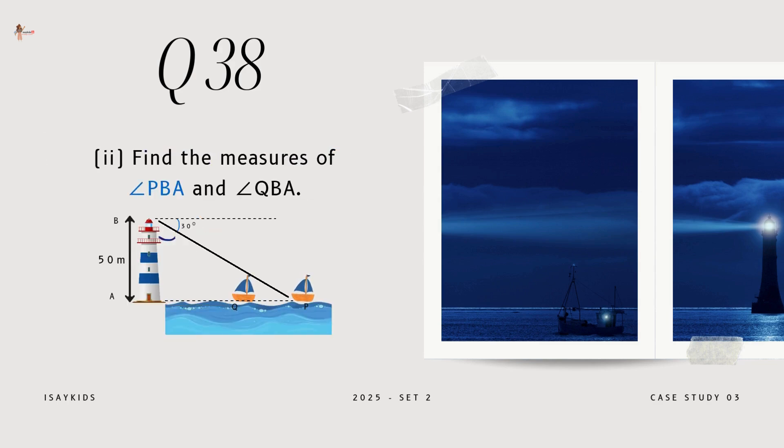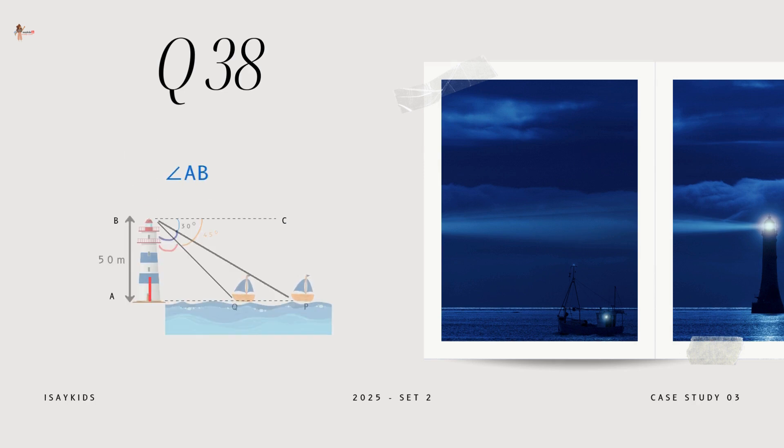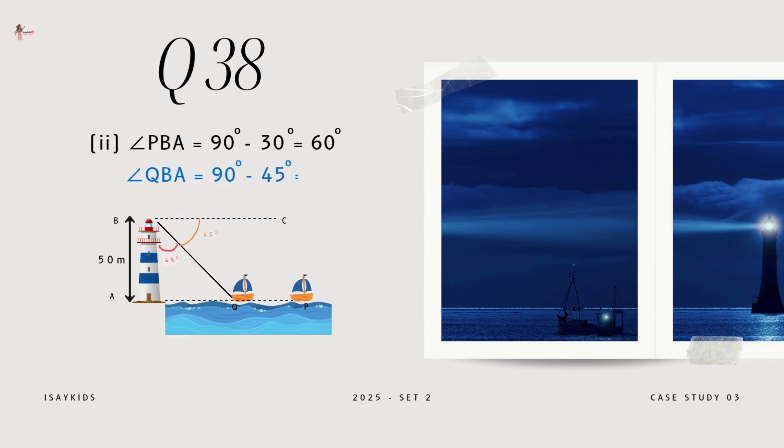Find the measures of angle PBA and angle QBA. Angle ABC is 90 degrees. Thus, angle PBA would be 90 minus 30 that is 60 degrees. Similarly, angle QBA would be 90 minus 45 that is 45 degrees.